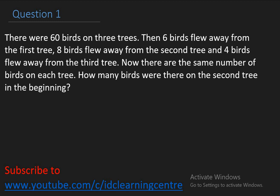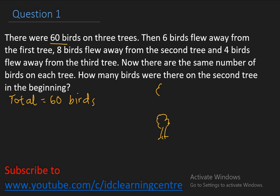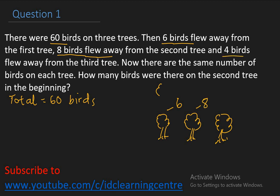For any word problem like this, it is always encouraging to bring out a numerical value. So there were 60 birds on three trees — total number of birds is 60. We have three trees: let this be the first one, the second one, and the third tree. From the first one, according to the question, six birds flew away — minus six. From the second, eight birds flew away — minus eight. From the third, four birds flew away — minus four. Remember, we have 60 birds.